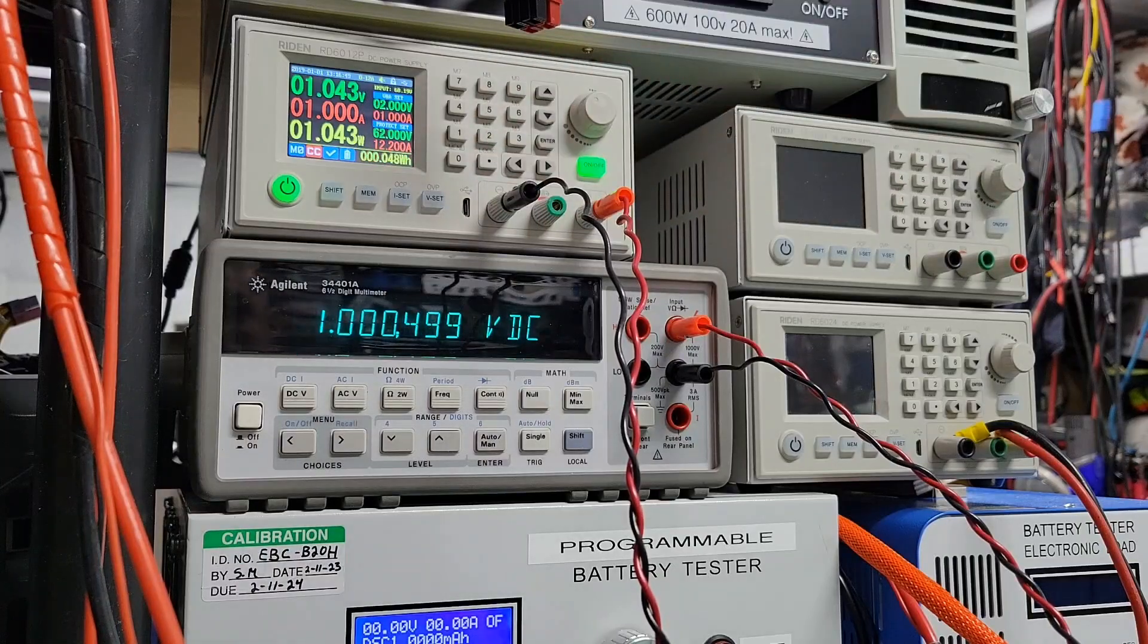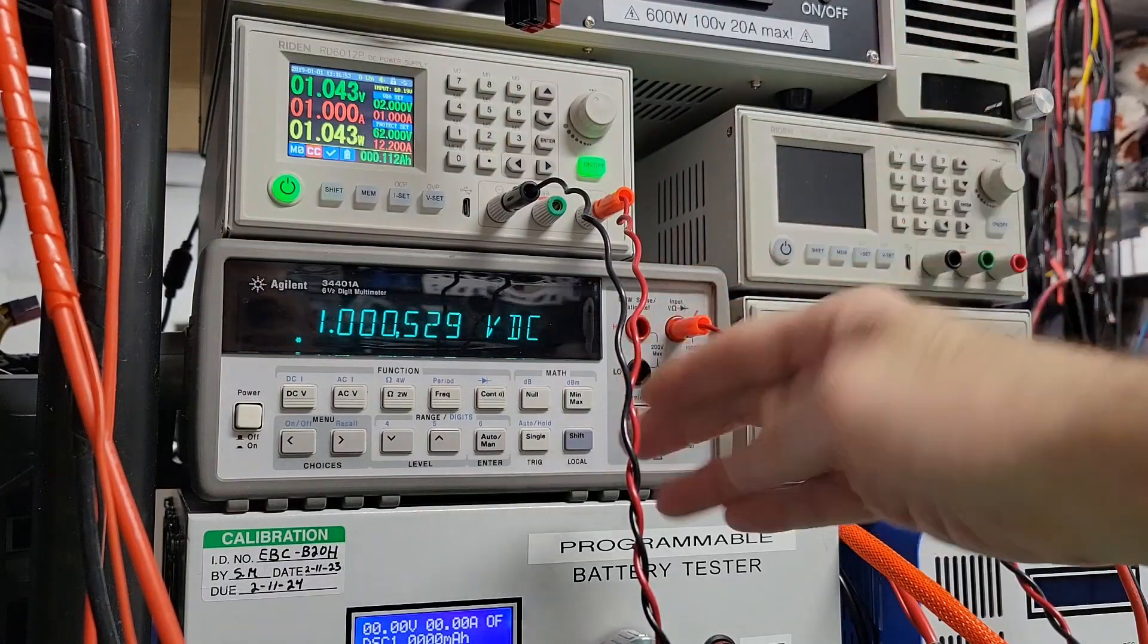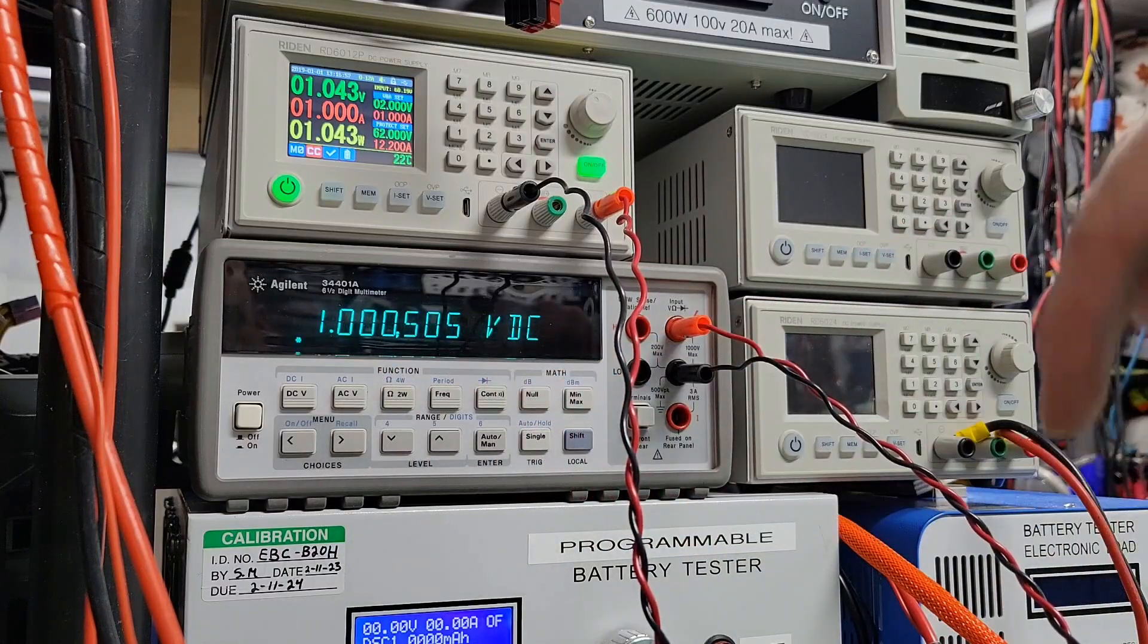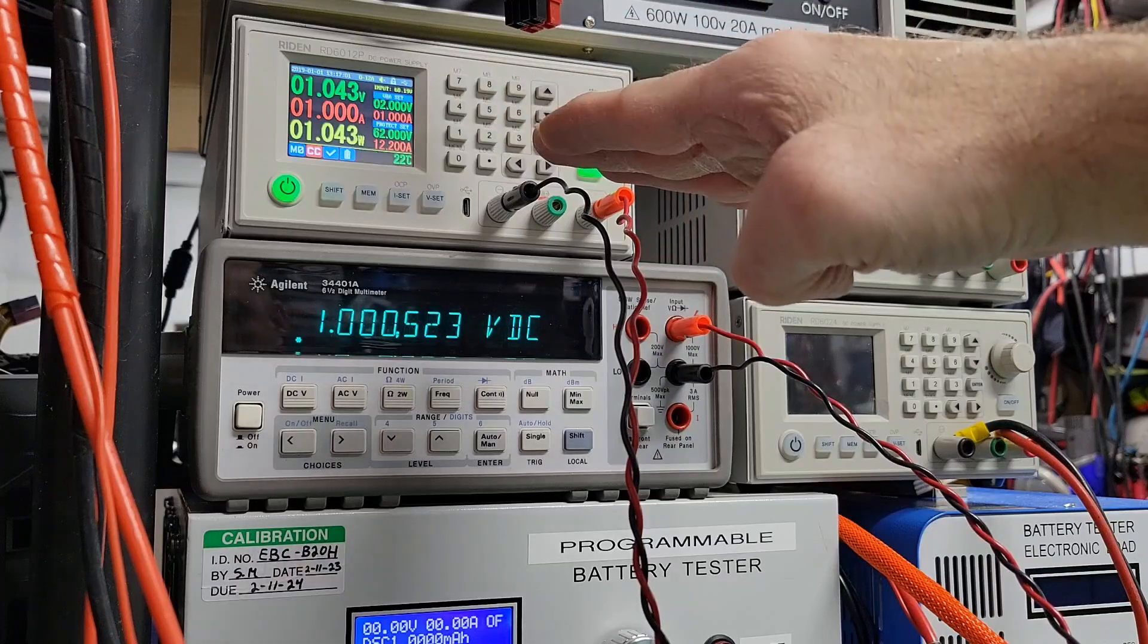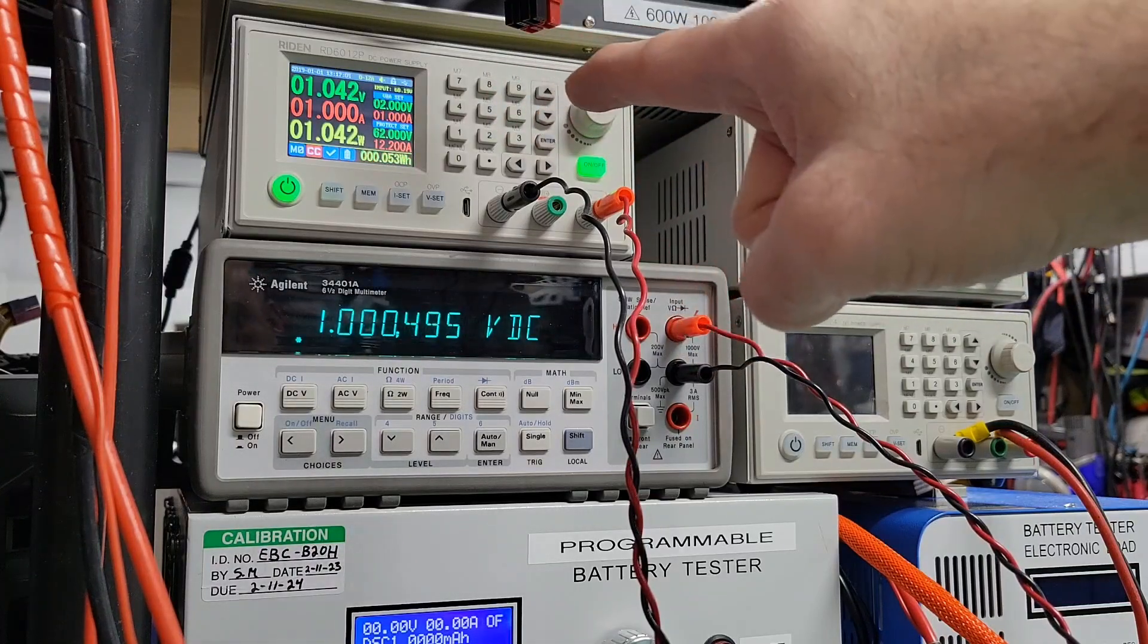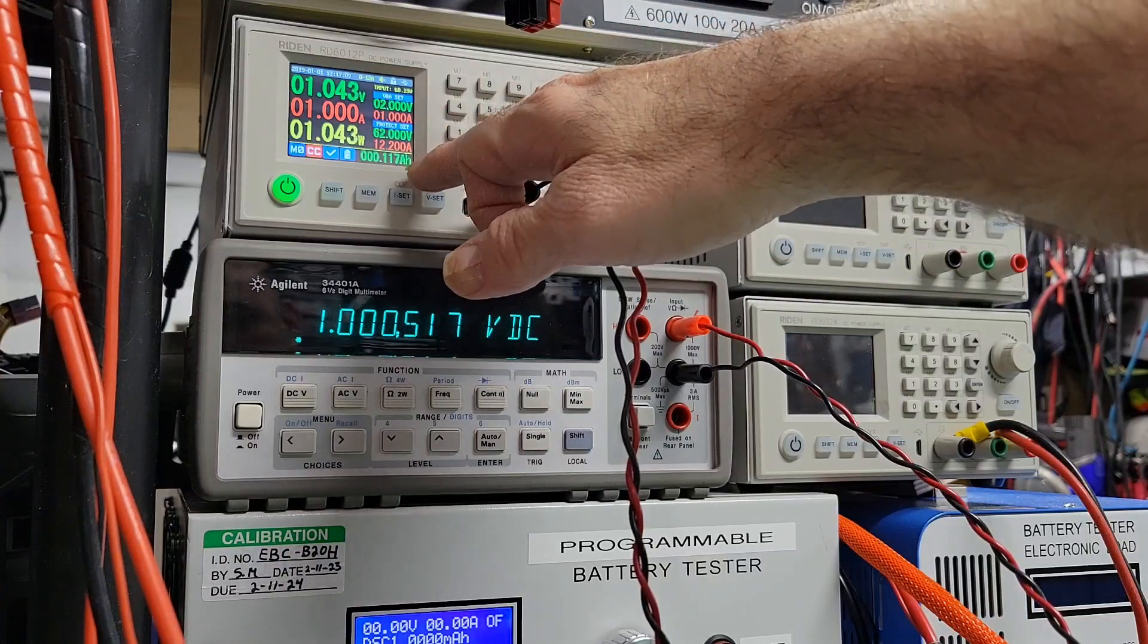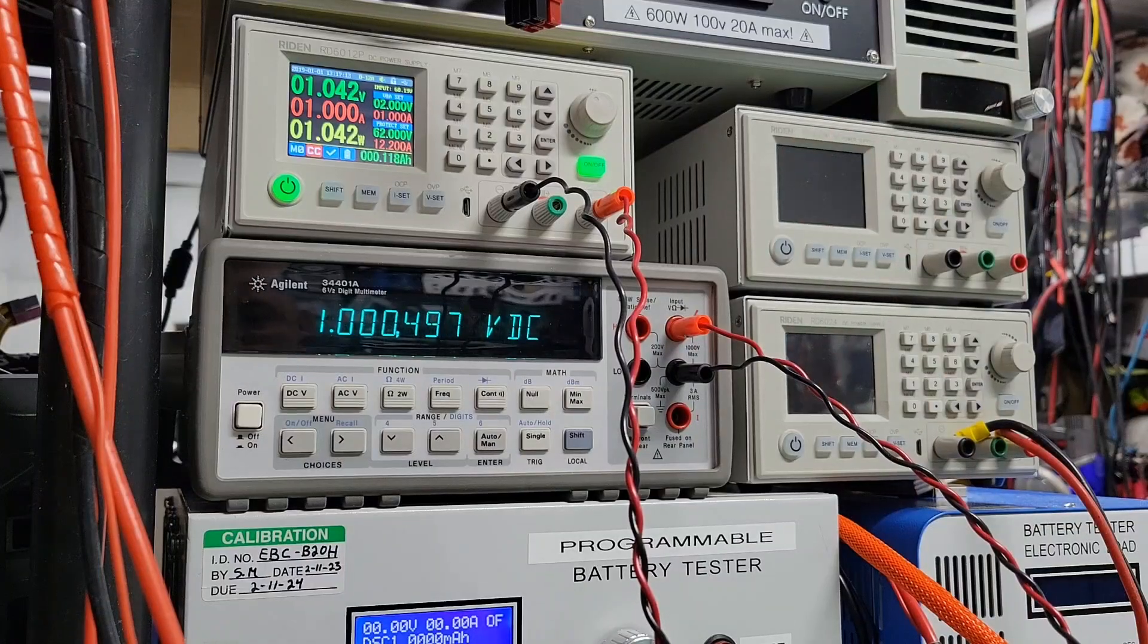And now boom. You see. Exactly 1 amp. So I have 1.000 volt across the 1 ohm resistor. And this source is exactly 1 amp. So I can be pretty confident that if I use this current source to measure the milliampere with the value here, I will be able to check my capacity meter.